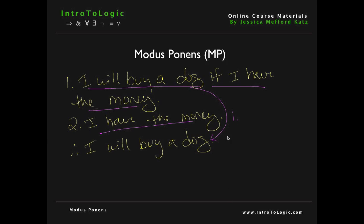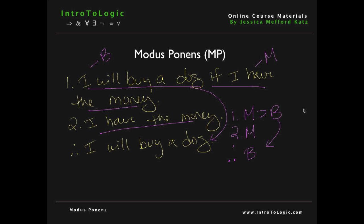Let's write it out in symbolic notation. Premise one: if I have the money, I will buy a dog. Let's symbolize 'I have the money' with the letter M and 'I will buy a dog' with the letter B, giving us 'if M then B.' Premise two says I in fact have the money — M. And therefore we can conclude the consequent B: I will buy a dog. Premise one and two are assumptions, and line three is deduced from the rule modus ponens. And that's how you write it.